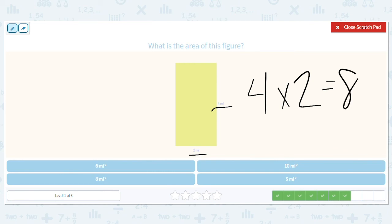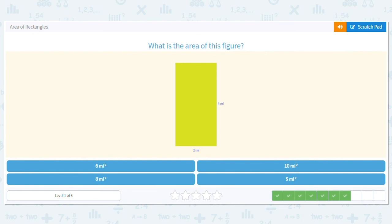So that's saying that I could have four rows with two squares in each row to fill it up. And each one of those squares is one mile.